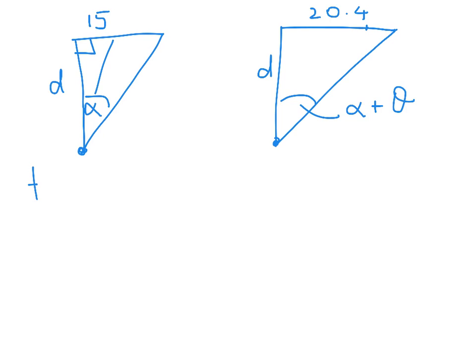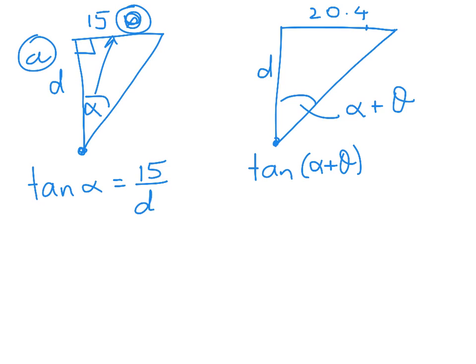Well, we've got this side is the opposite, and this side is the adjacent. That's meant to say O. So tan of alpha is equal to 15 over D. Here, we've got tan of alpha plus theta is equal to 20.4 over D. So we're looking at that, and we're going, how am I going to get an expression for theta?